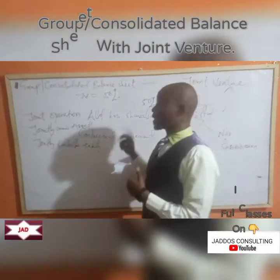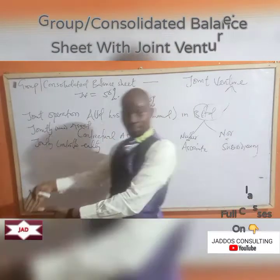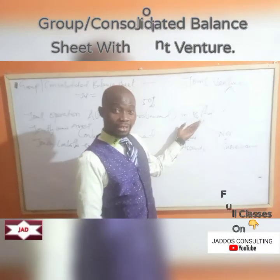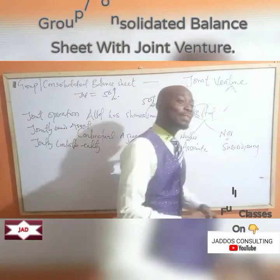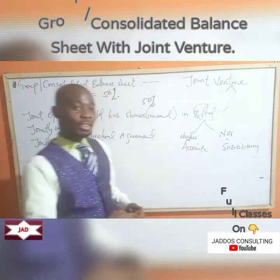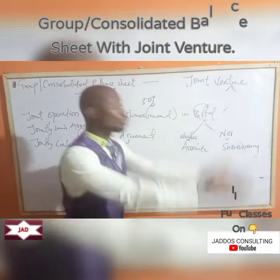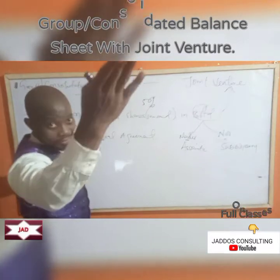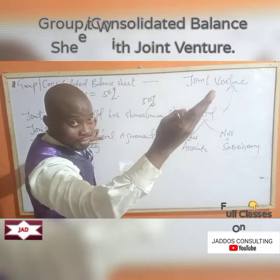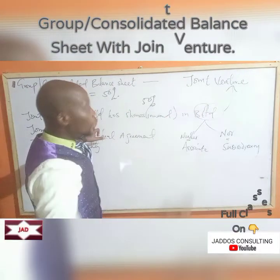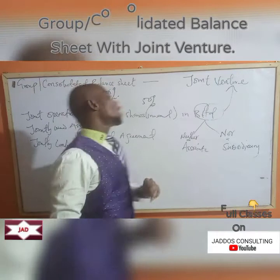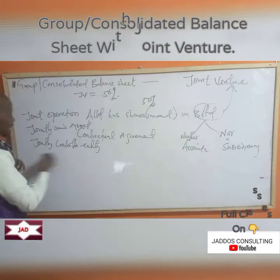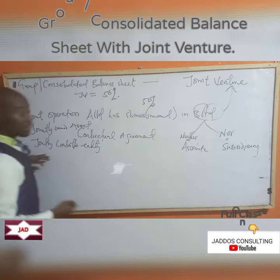Jointly controlled entity is more like what we are looking at here. There is an entity — say B Limited — that is jointly controlled by A Limited and another company, say C Limited. That is a joint venture. You have an entity that is jointly controlled — that is what we call a jointly controlled entity.